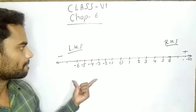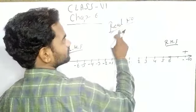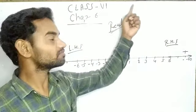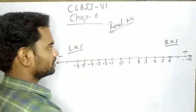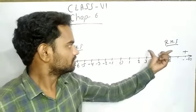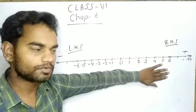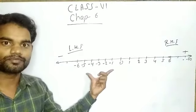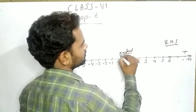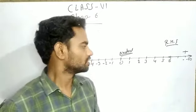On the number line, we can represent all the real numbers — natural numbers, whole numbers, integers, rational numbers. But today we are studying only integers. In the positive direction or right-hand side, the numbers represented are called positive numbers. On the left-hand side, the numbers are called negative numbers. Zero is in the middle and is neutral — 0 is neither negative nor positive.